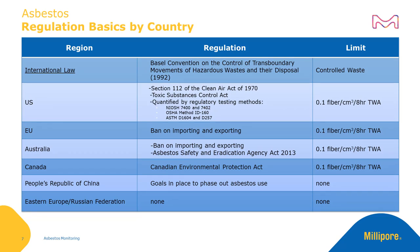Because of its high incidence of asbestos-related illness, Australia has passed the Asbestos Safety and Eradication Agency Act of 2013, which was implemented by 2018. Conversely, Russia and China, the highest producers and exporters of asbestos globally, currently have no regulatory controls on asbestos. China has some goals in place to eventually phase out asbestos use, but Russia still has not declared similar intentions.